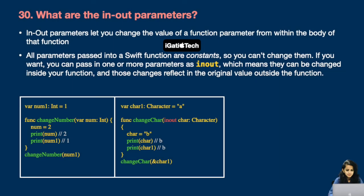Last question: What are in-out parameters? In-out parameters let you change the value of a function parameter from within the body of that function. All parameters passed into a Swift function are constants, so you can't change them by default. If you mark one or more parameters as inout, they can be changed inside the function and those changes reflect in the original value outside the function. In the first example with a normal parameter, num prints 2; in the second with an inout parameter, character prints 'b' — and the original variable outside the function also prints 'b' because the value was updated inside the function call.